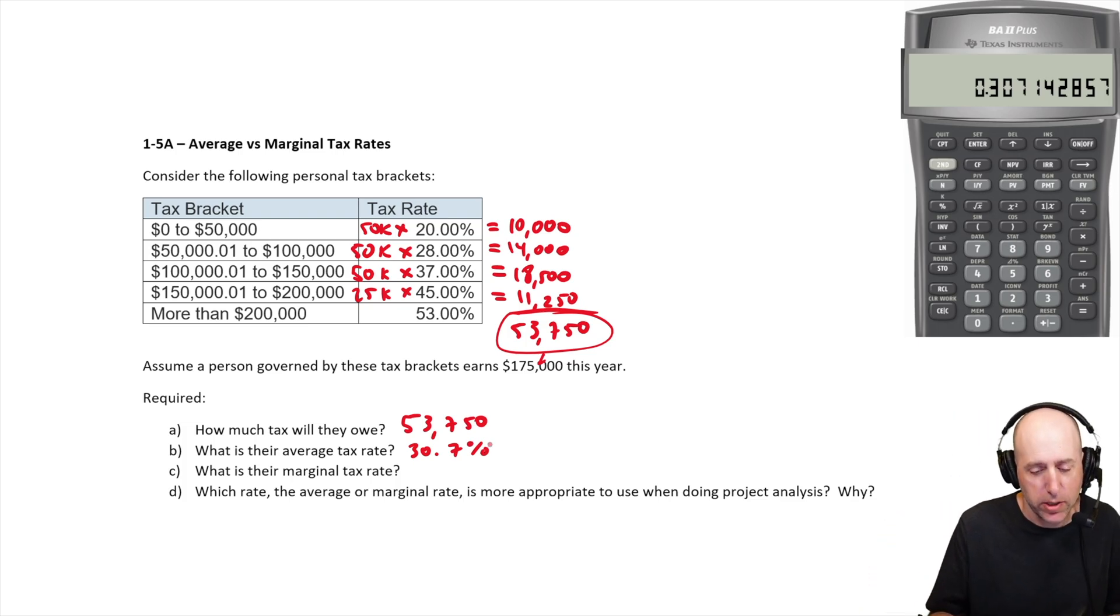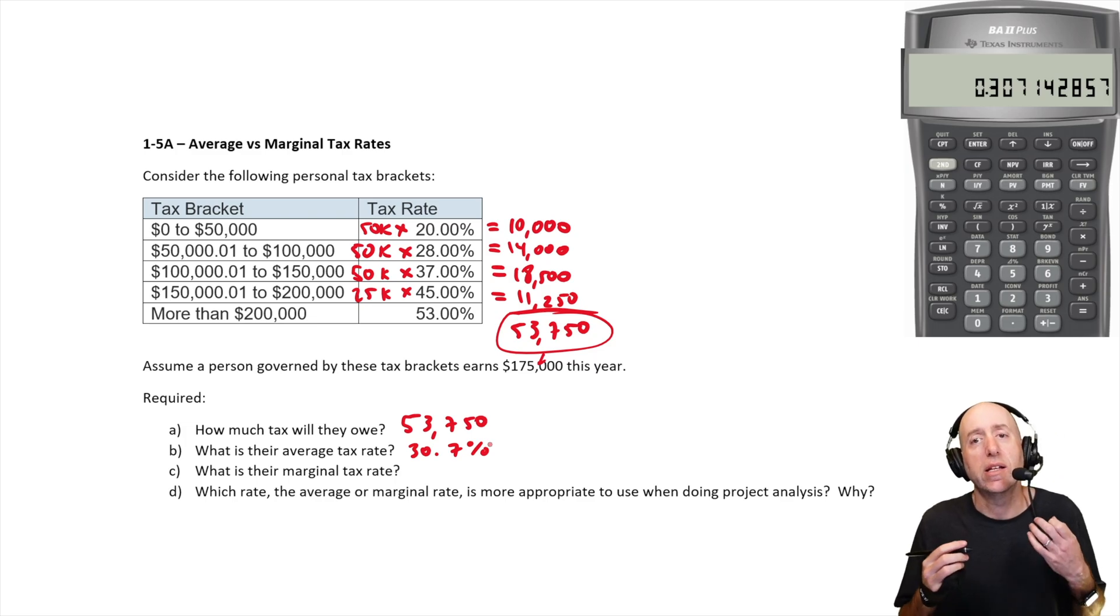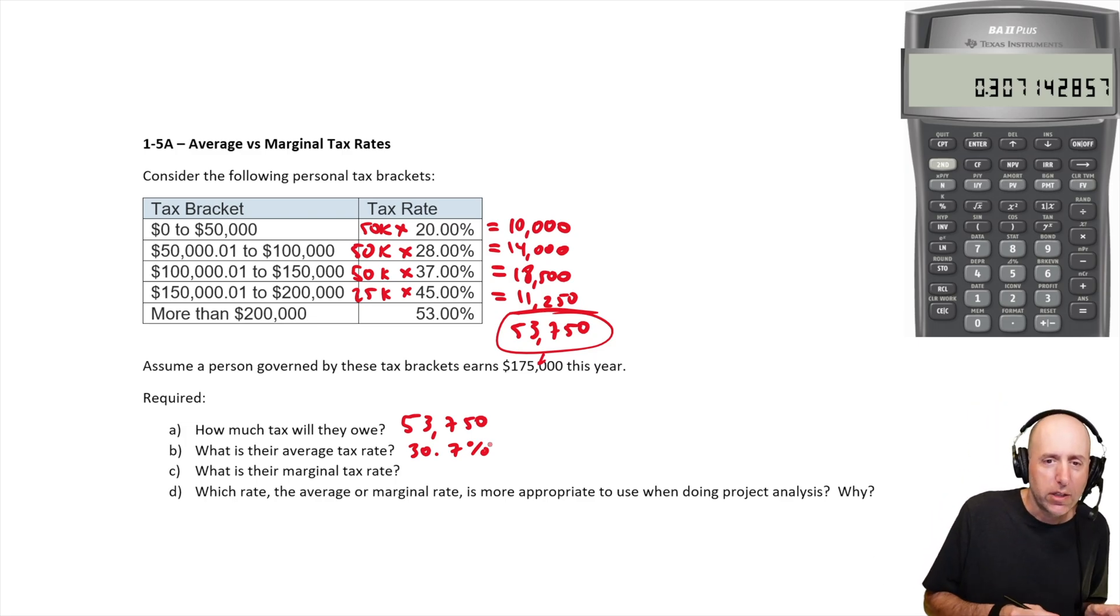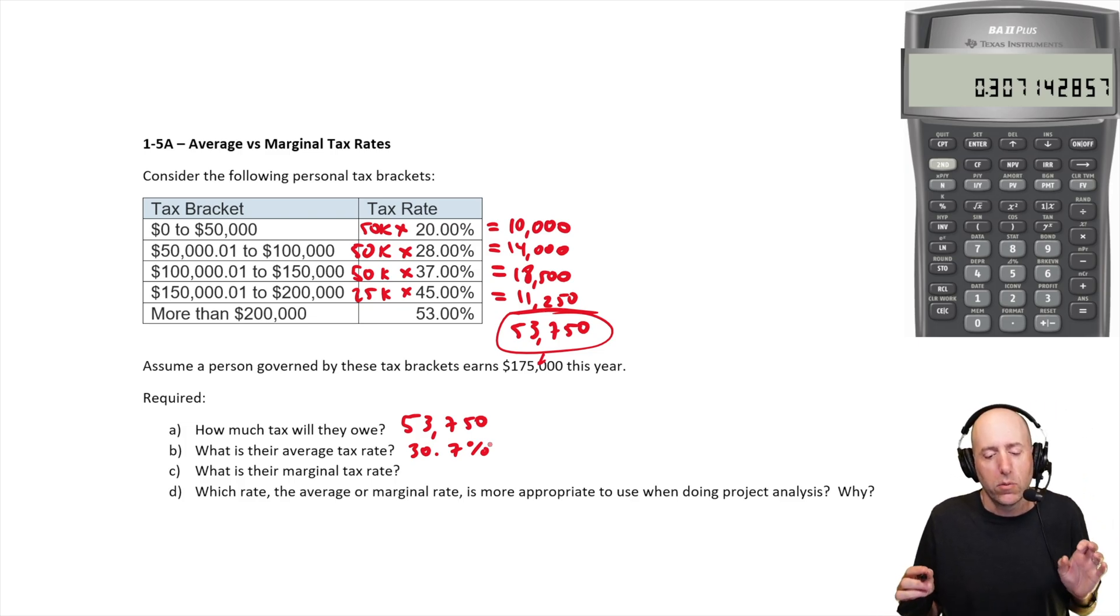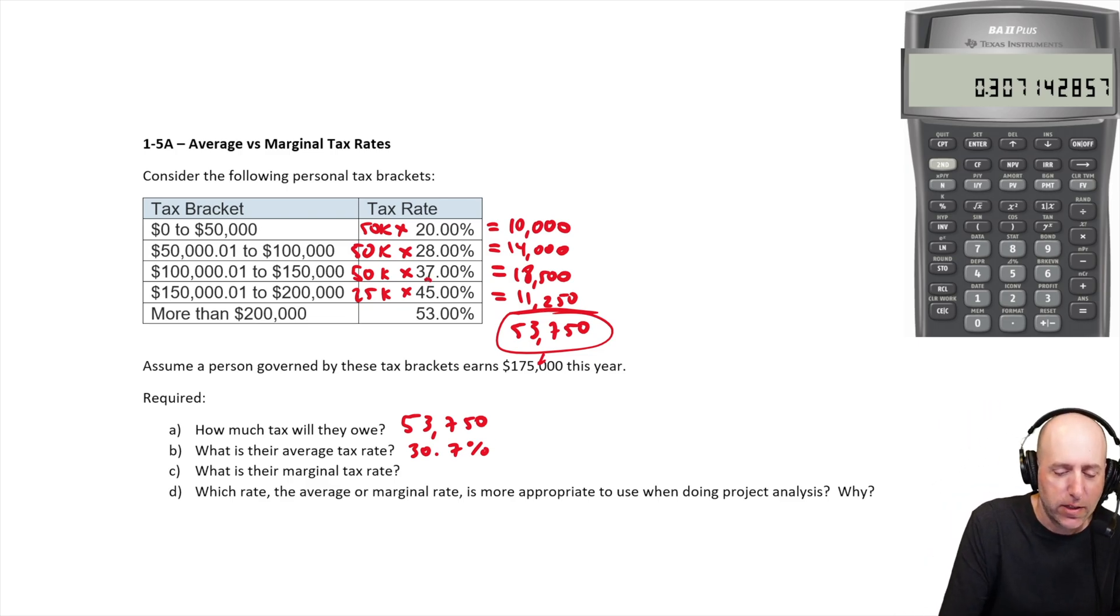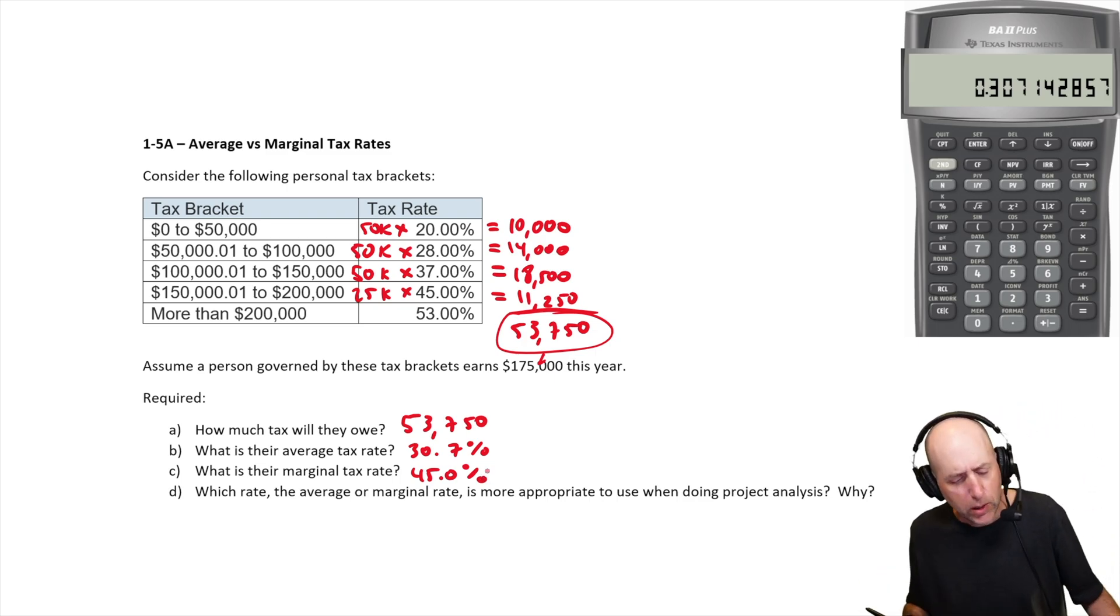What is our marginal tax rate? Our marginal tax rate is the tax rate on the next dollar we earn. So let's just say we got a consulting contract and we were able to make $10,000 more, right? Some extra contract. So we weren't going to make $175,000. We were going to make $185,000. What's the taxes on that new $10,000 we make? The tax rate is 45%. That's sort of where we're sitting on the tax scale. So the marginal tax rate is any new money that comes in. What's the tax rate going to be on that? 45%.